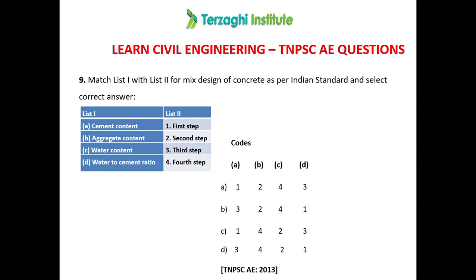Question 9: What is the correct sequence for mix design of concrete as per Indian Standard? The steps are: 1st — water-cement ratio, 2nd — water content, 3rd — cement content, 4th — aggregate content. The answer is option B: 3, 4, 2, 1 (cement content is step 3, aggregate content is step 4, water content is step 2, water-cement ratio is step 1).